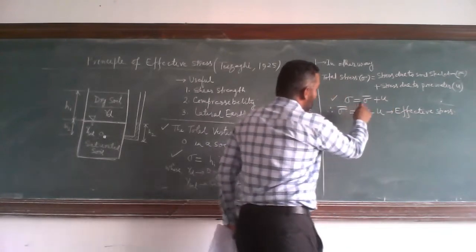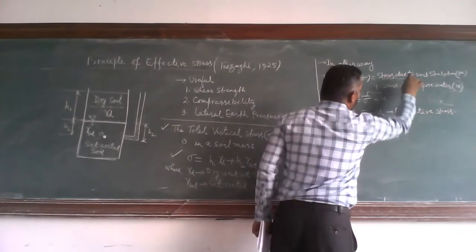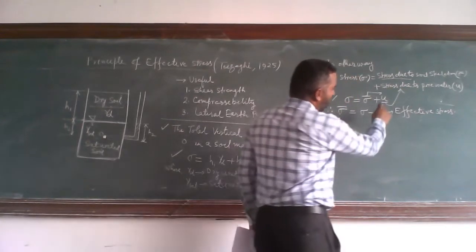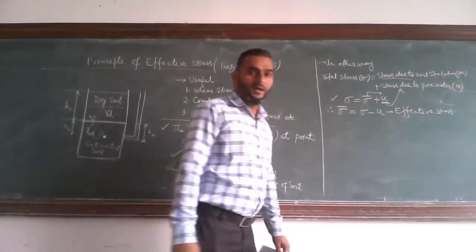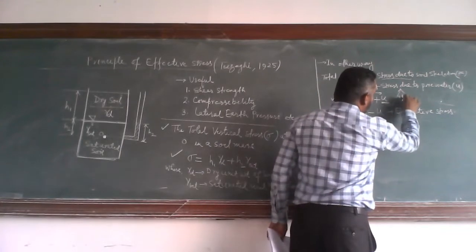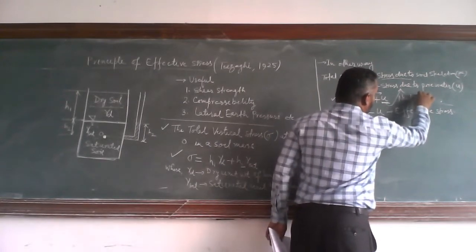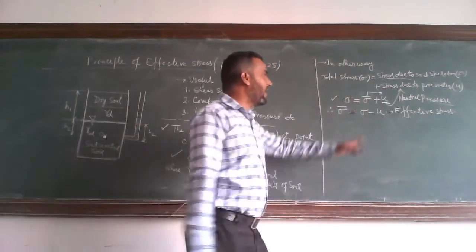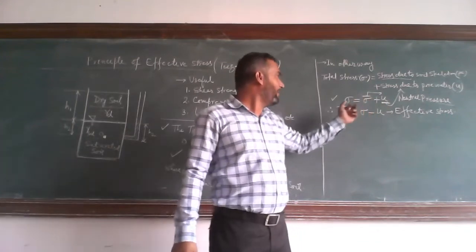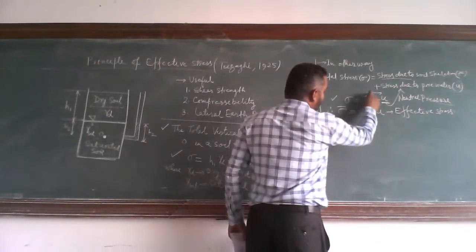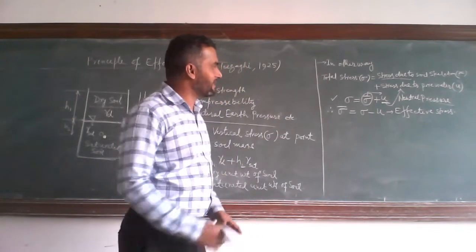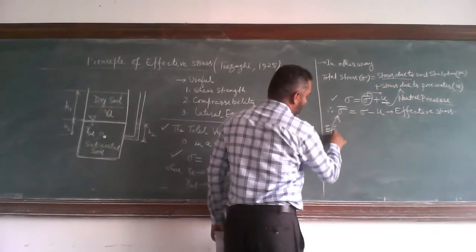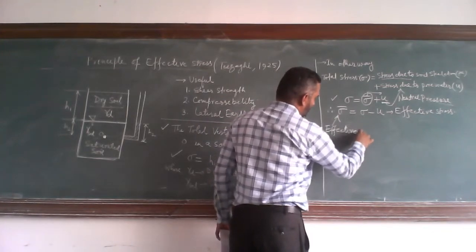So total stress sigma equals sigma-bar plus U, where sigma-bar is the stress due to the soil skeleton and U is the stress due to pore pressure. This pore pressure U is also called neutral pressure. It is called neutral because it acts in all directions. And sigma-bar, the stress due to the soil skeleton, is called effective stress.